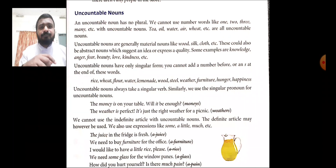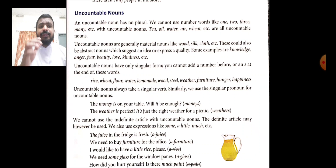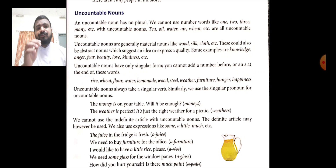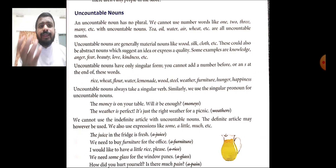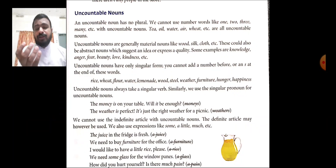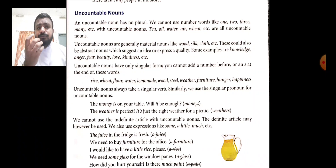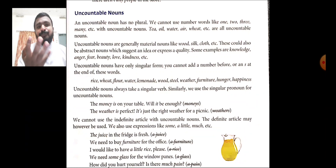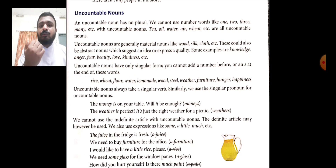Uncountable nouns are generally material nouns — for example: wood, silk, cloth. They can also be ideas or qualities, meaning abstract nouns can be called uncountable nouns. For example: knowledge, anger, fear, beauty, love, kindness — because we cannot count these things.